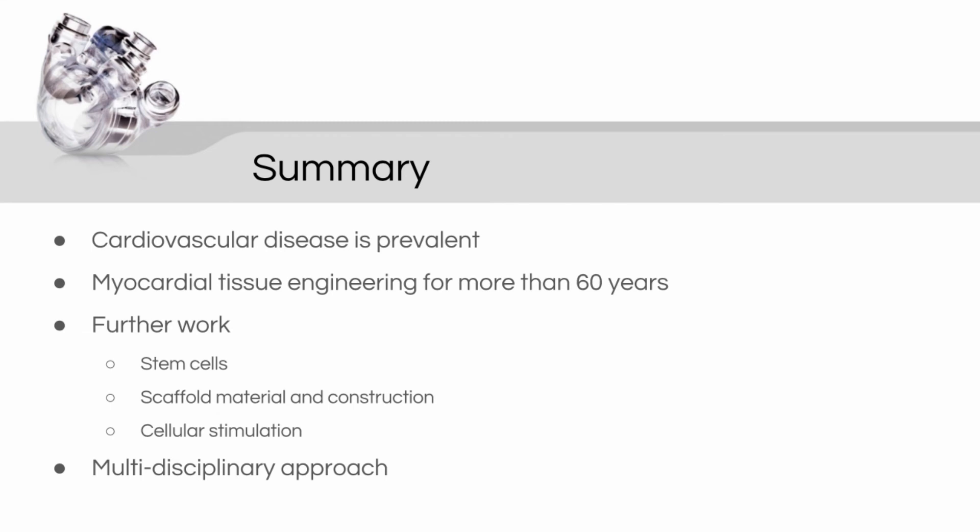Future prospects include research into other cell sources such as stem cells, and the study of scaffolds assessing different material types, their construction and nanostructure. Collaboration between material scientists, engineers, biologists, and physicists may result in better progress in obtaining optimal tissue-engineered myocardium that can mimic the physiological and mechanical properties of native cardiac tissue.